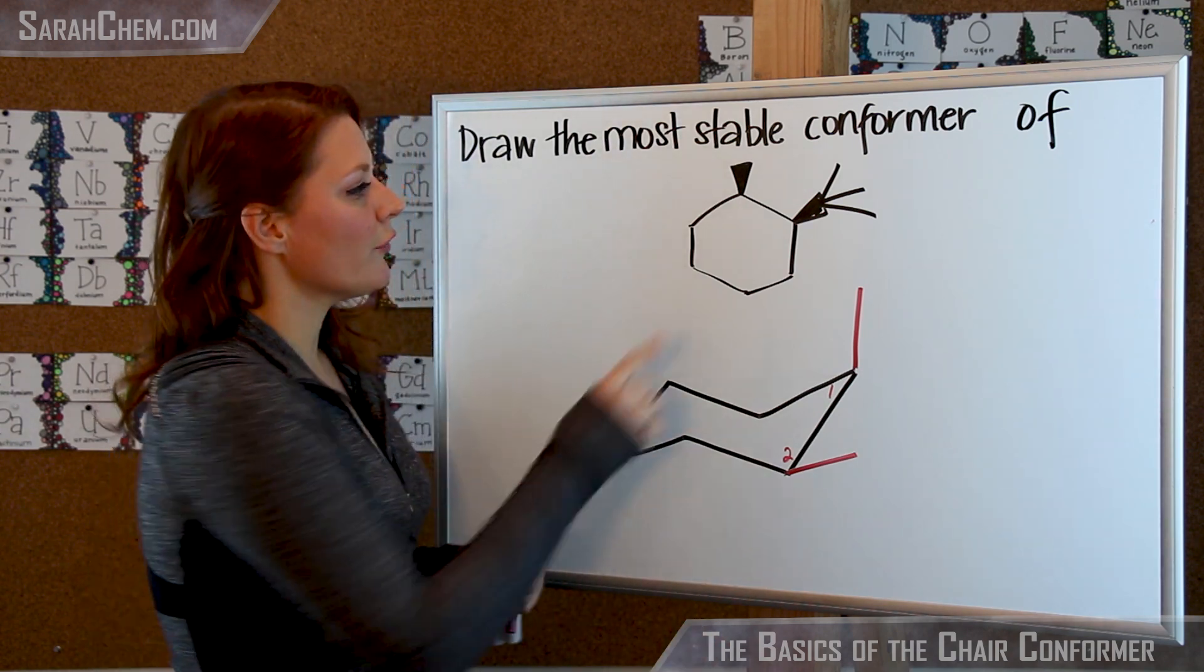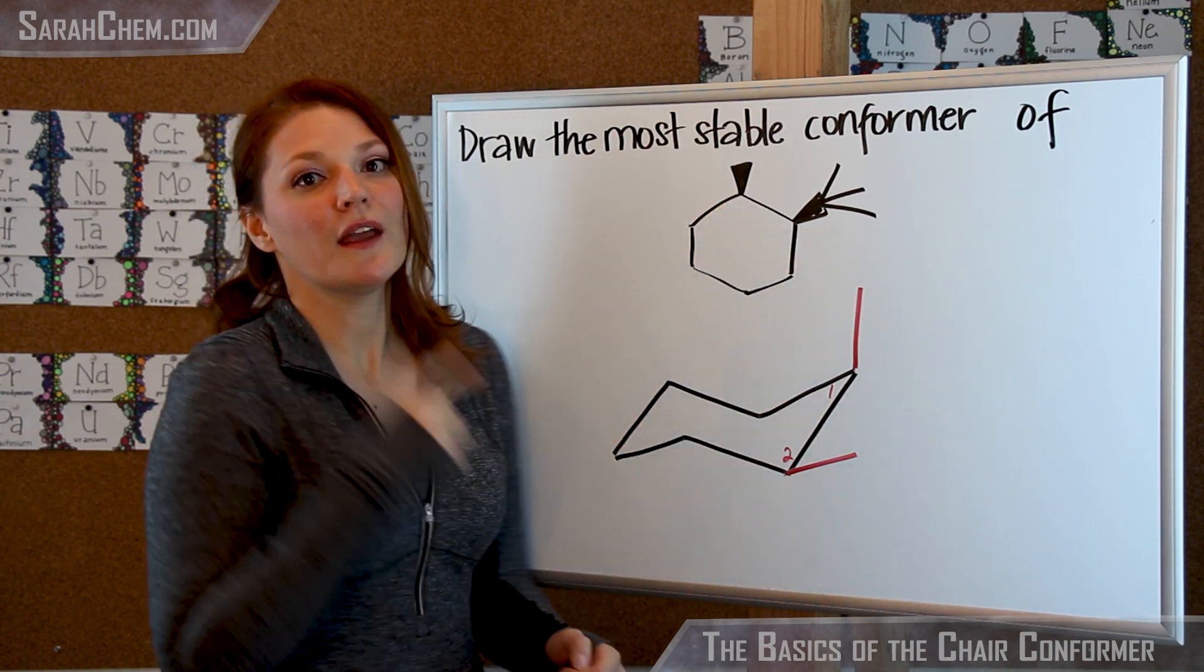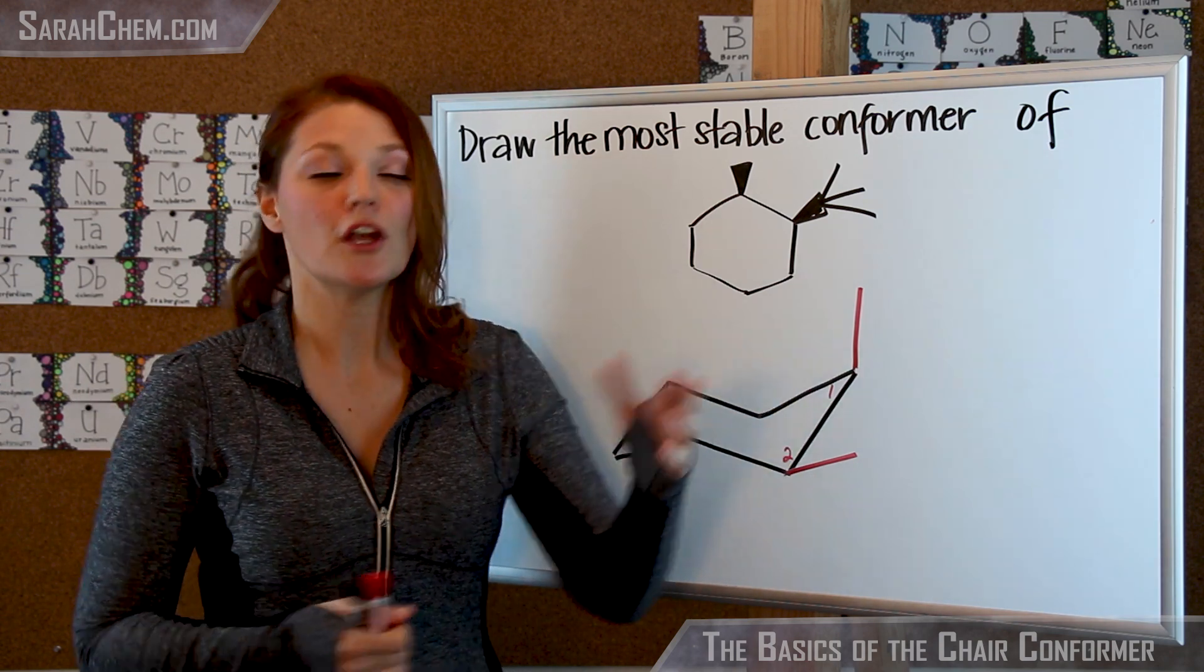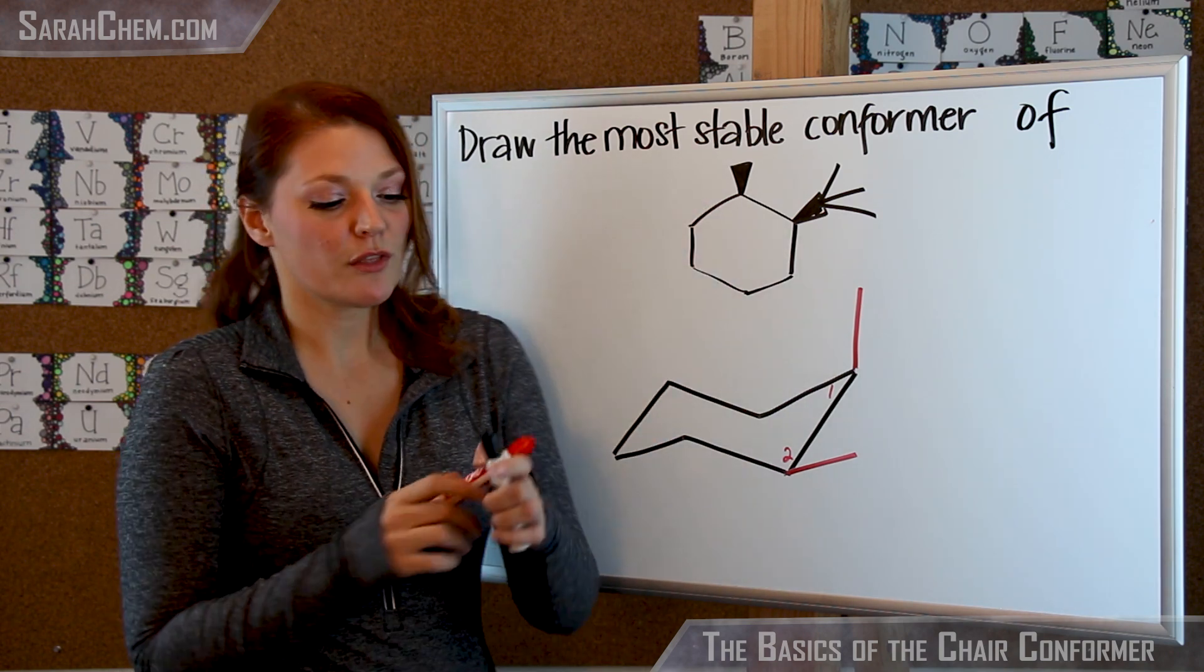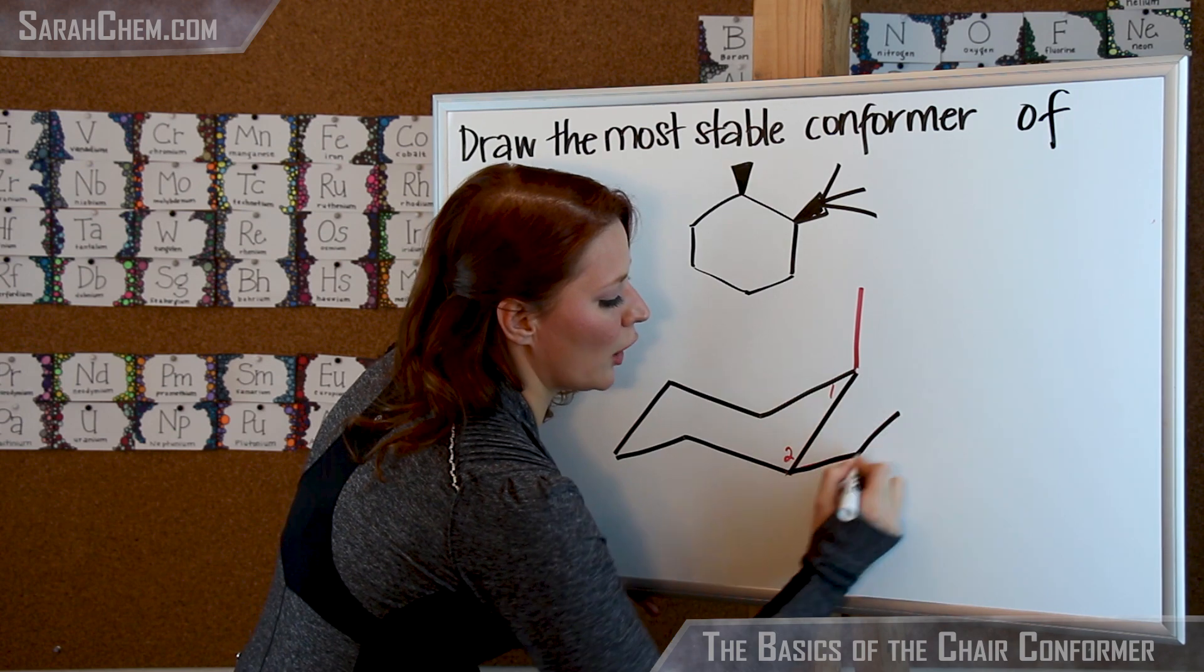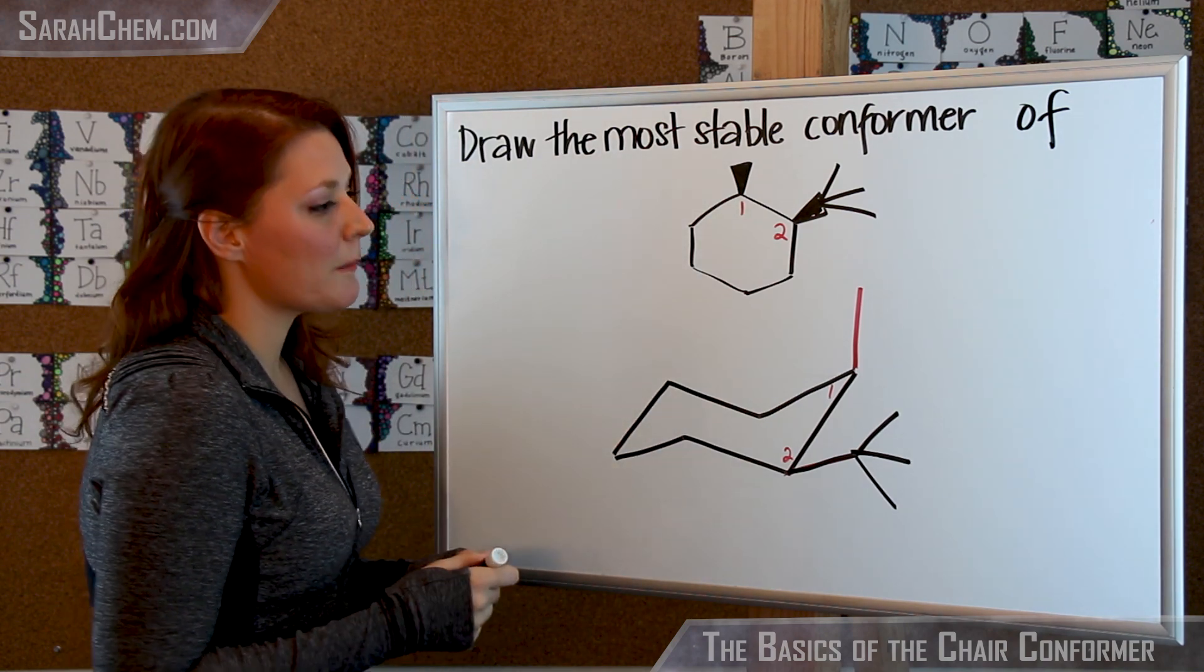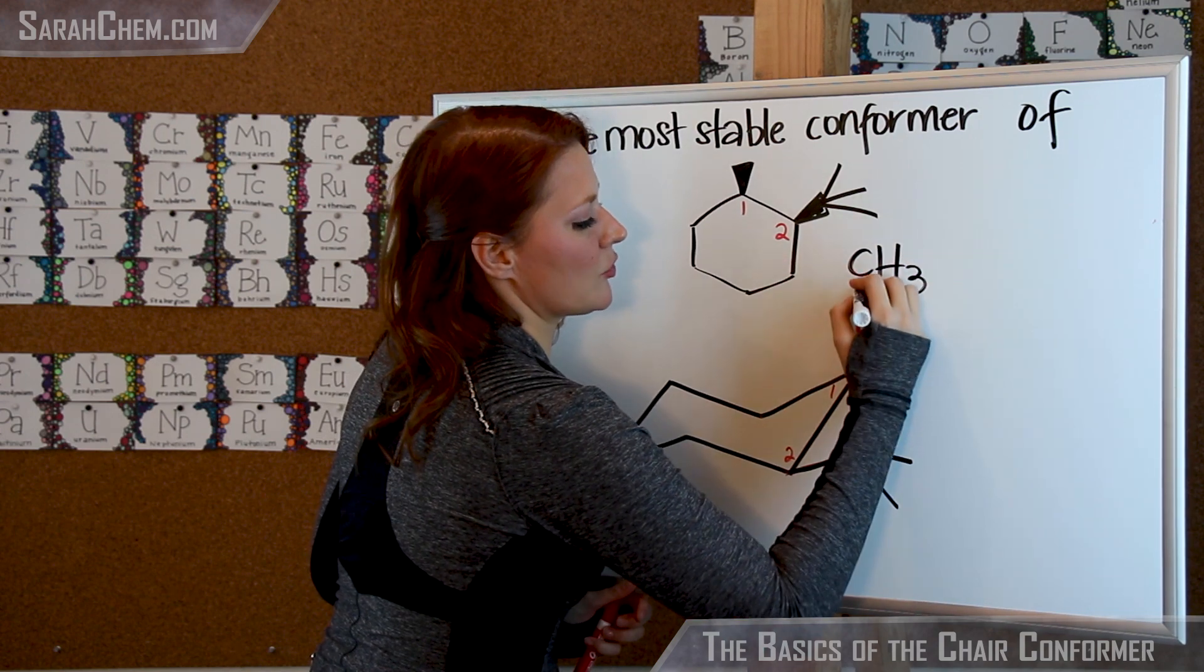So now, if we take a look at this, this here is a tert-butyl group, and this is a methyl group. As we've been talking about, the biggest, bulkiest groups are the ones that absolutely need to have the equatorial position if it's available. So this tert-butyl is going to have priority over the methyl. So that means we're going to preferentially place it here on this equatorial position on carbon 2. So that means here, I'm going to call this carbon 2 and this carbon 1, which means then that the methyl is going to be more stable up here on this axial position right here.